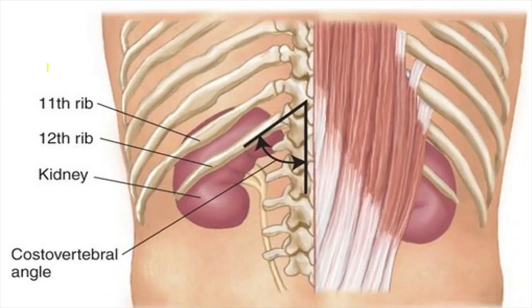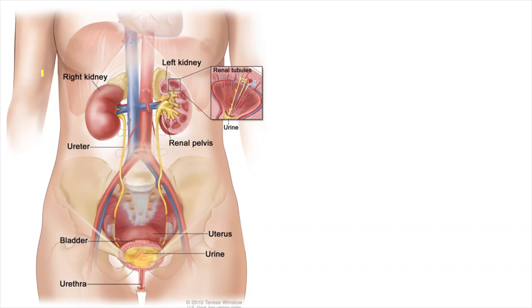One important point before starting applied anatomy and physiology is the location of the kidney. It is located along the 12th rib and 11th rib. This is the renal angle between the outer part of the 12th rib and the lateral part of the erector spinae, called the renal angle, where there is tenderness in case of urinary tract infection, especially pyelonephritis.